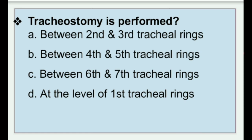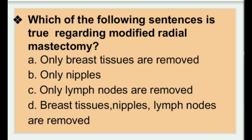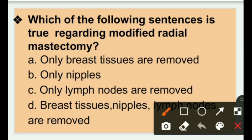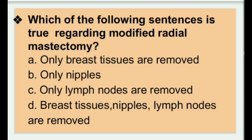Next: Which of the following sentences is true regarding modified radical mastectomy? Options: only breast tissue is removed, only nipples are removed, only lymph nodes are removed, or breast tissue, nipples, and lymph nodes are all removed. During a modified radical mastectomy, there is removal of breast tissue, nipples, as well as lymph nodes — that is the right answer.